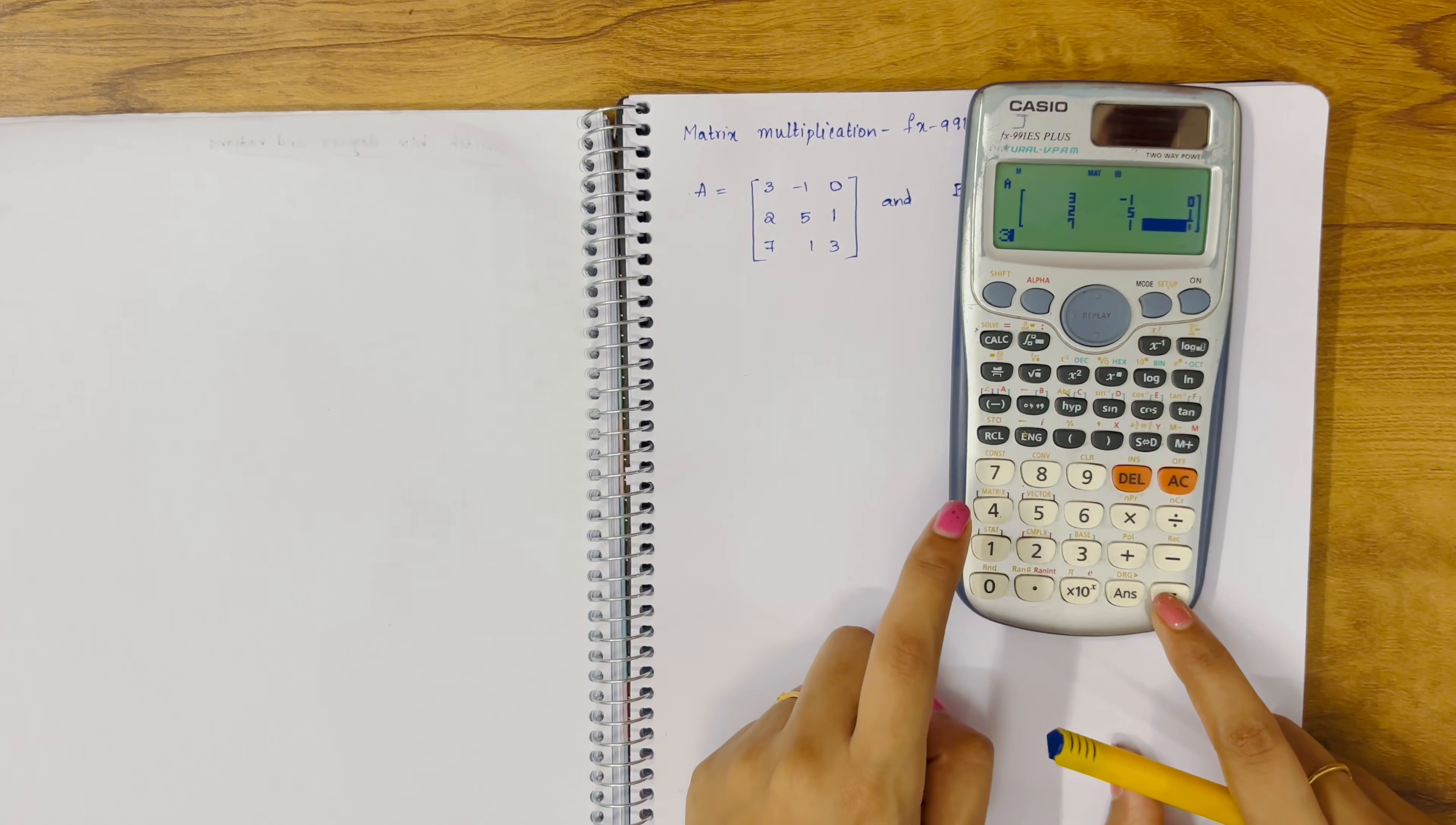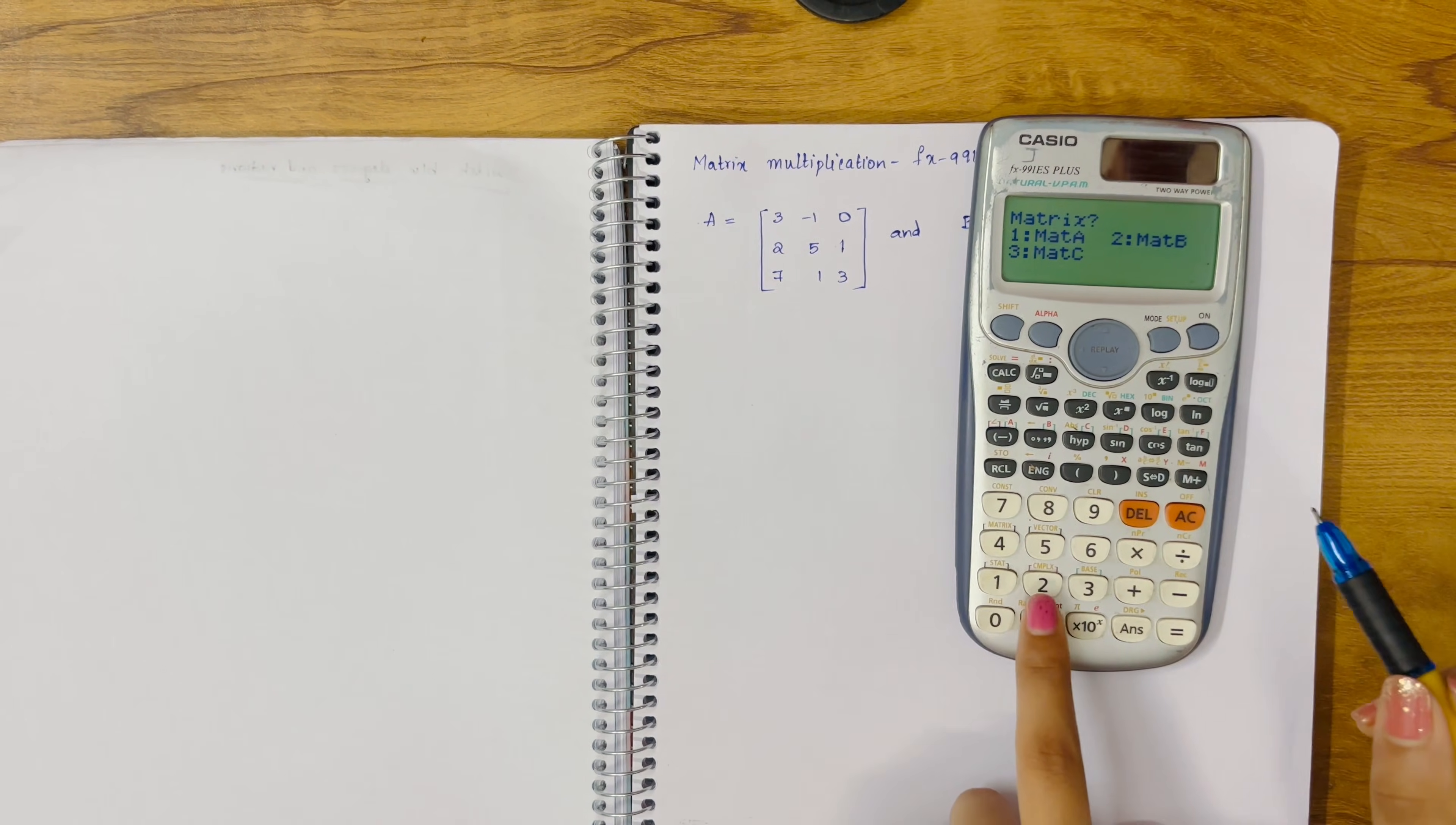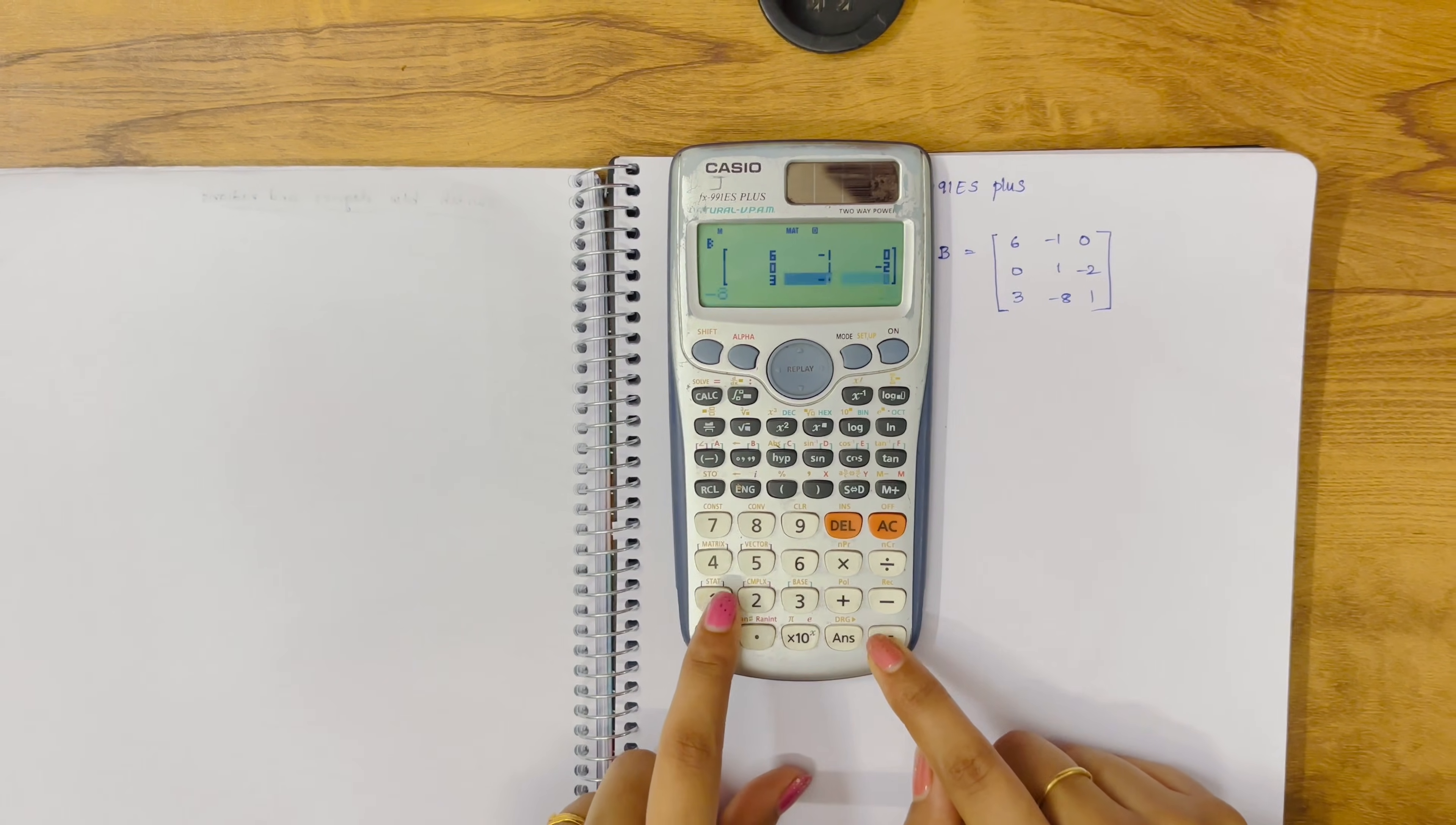Now click shift 4. It gives us options 1, 2. Since we have to input another matrix, we go with data. Mat B, that is 2. Again, it's a 3x3 matrix, press 1. Input the values: 6 equals -1 equals 0 equals 0, 1 equals -2 equals 3 equals -8 equals 1.